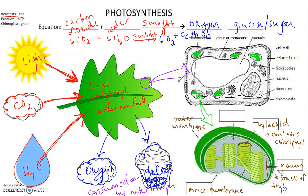Whenever I think of chloroplasts, I always think of thin mints. I think of the granum as the sleeve of thin mints inside the box, and the thylakoid as each individual thin mint. The last piece is the stroma, which is the space inside the chloroplast. The reason we talk about these is because this is where the two different parts of photosynthesis happen: the light dependent reactions happen on the thylakoid membrane, and the light independent reactions happen inside the stroma.